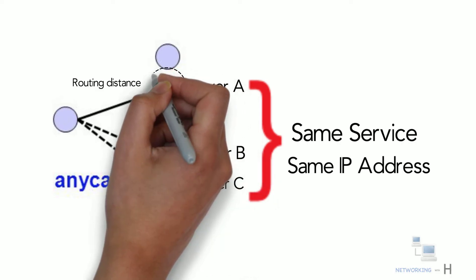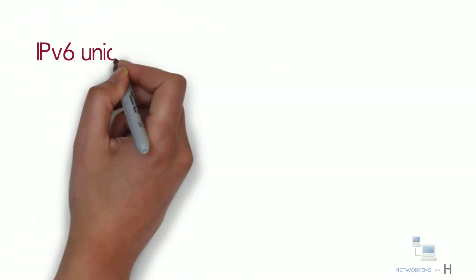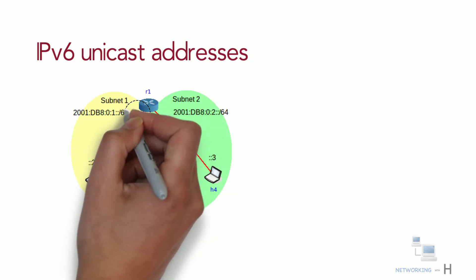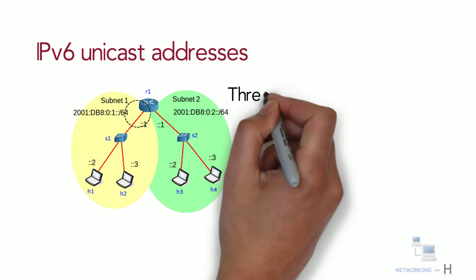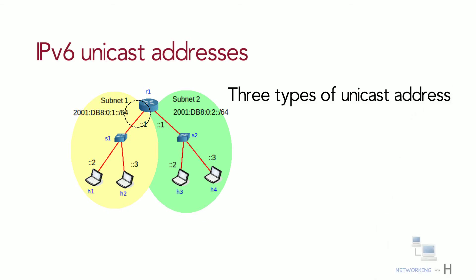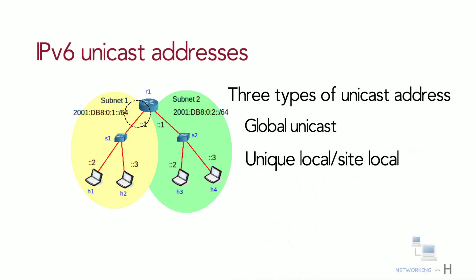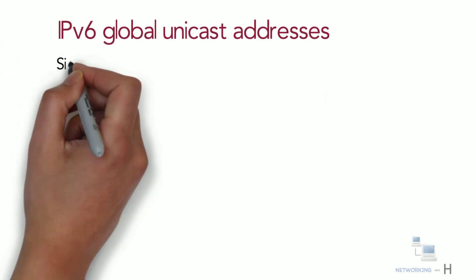Let's discuss each category in more detail, starting with IPv6 unicast addresses. A unicast address represents a single interface — packets addressed to a unicast address will be delivered to a specific network interface. There are three types of IPv6 unicast addresses: global unicast, unique local (or site local), and link local.